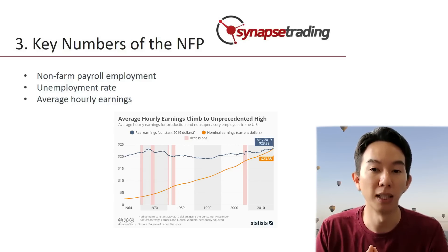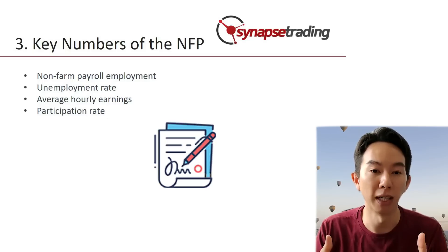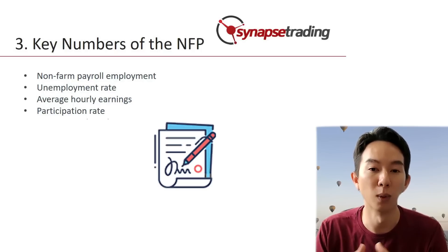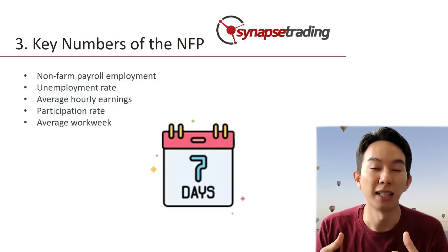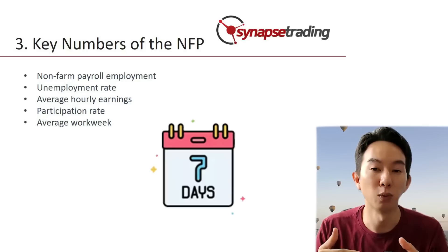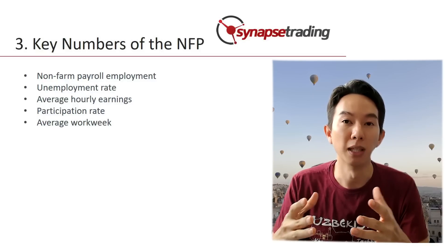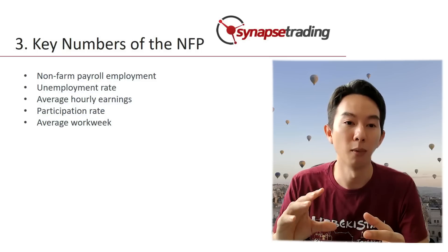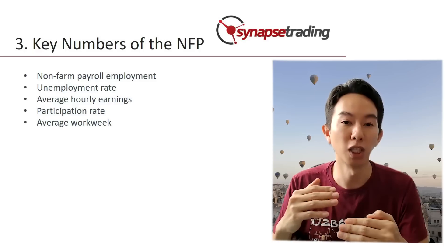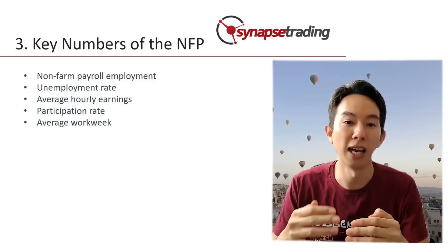A significant increase in average hourly earnings can signal an increase in inflation, which can lead to higher interest rates and a stronger US dollar. Next is the participation rate, which is the percentage of the civilian non-institutionalized population that is either employed or actively seeking work. A lower participation rate can indicate a lack of job opportunities while a higher participation rate can indicate a strong labor market. Next is the average workweek, which measures the number of hours worked per week by all non-farm employees. A decrease in the average workweek can indicate a slowdown in economic activity while an increase can signal economic strength. The relative importance of each number will vary depending on the current economic conditions and the outlook for future growth.